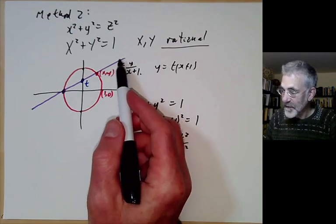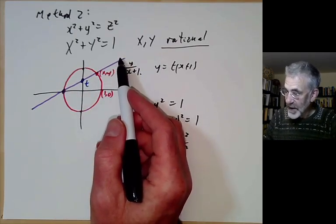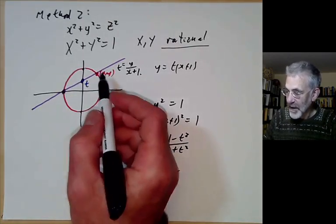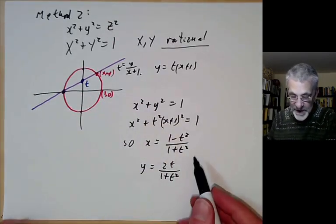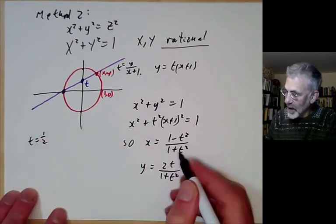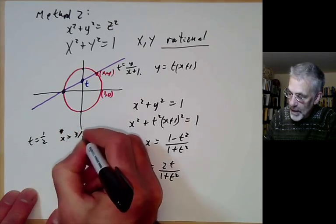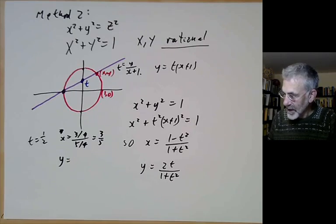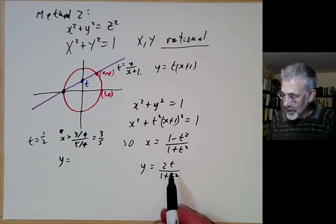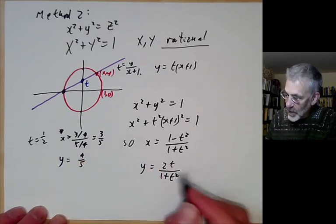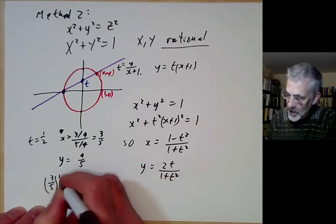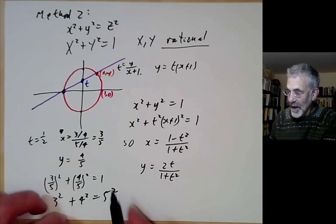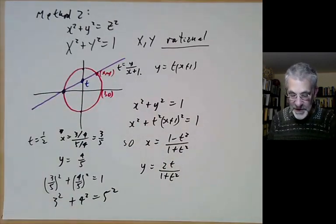The solutions of Pythagoras's equation correspond exactly to points t on the y-axis, plus one extra point. For example, taking t equals one-half, we get x equals 3/5 and y equals 4/5, giving 3/5 squared plus 4/5 squared equals 1, which is just 3 squared plus 4 squared equals 5 squared. By taking other rational values of t — say t equals one-third or t equals one-quarter — you can easily produce other solutions to Pythagoras's equation.